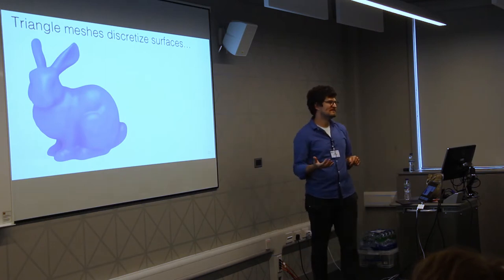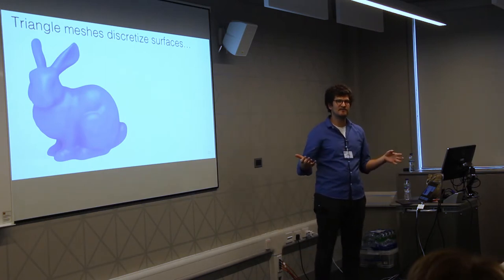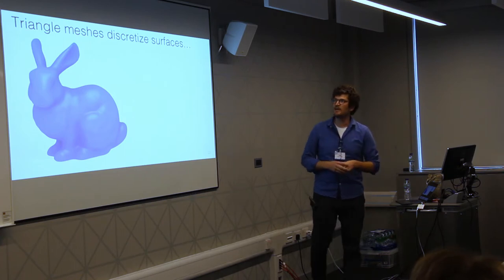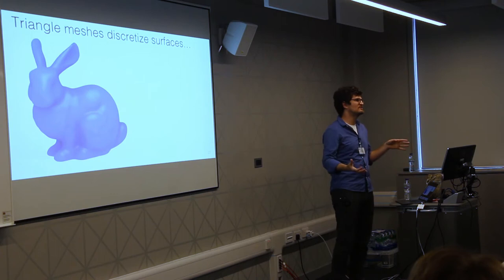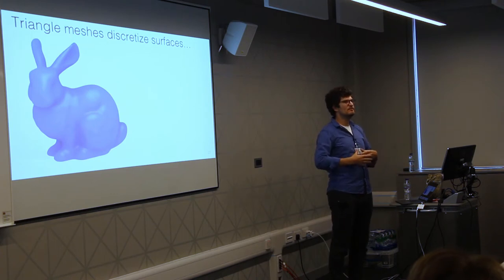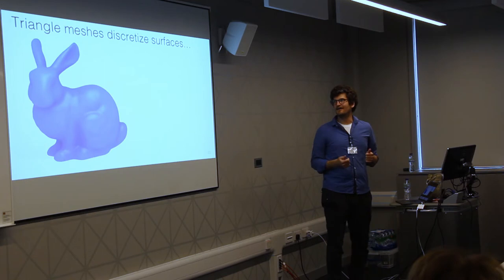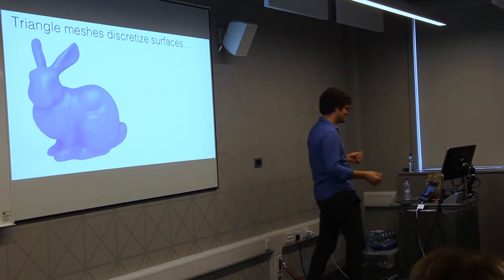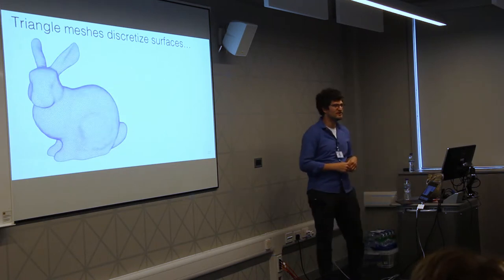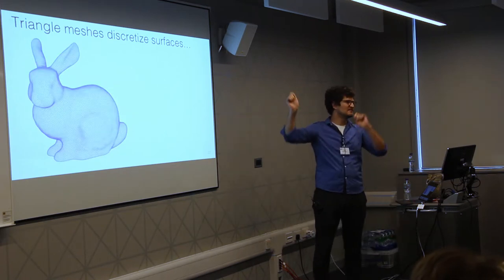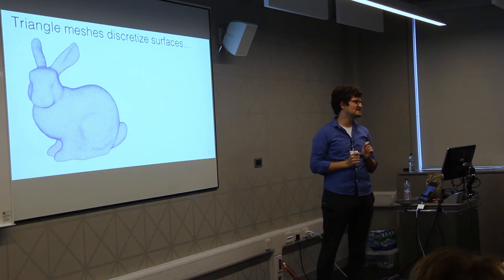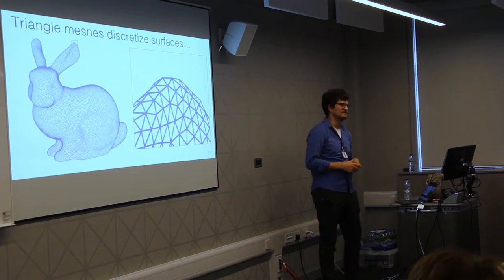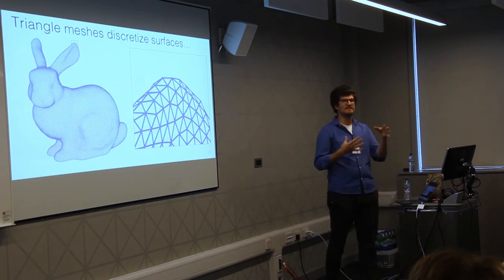The most common object we're dealing with in geometry processing is a 3D surface. We need some way of discretizing this on the computer. The standard way is the triangle mesh — we find lots of vertices on the surface and connect them together with triangles that give us connectivity information.